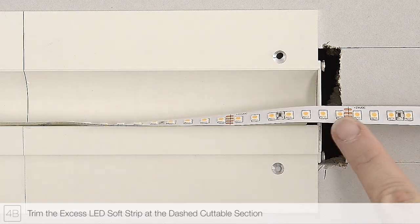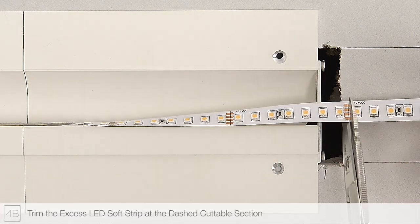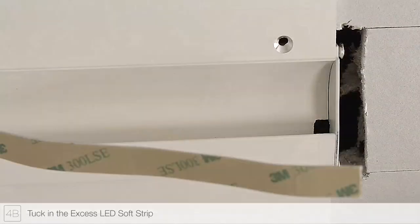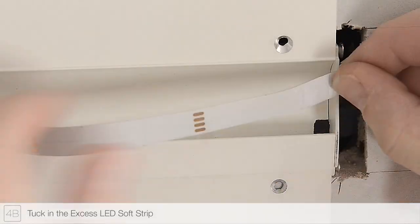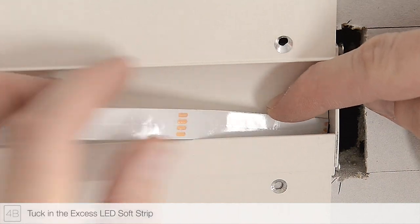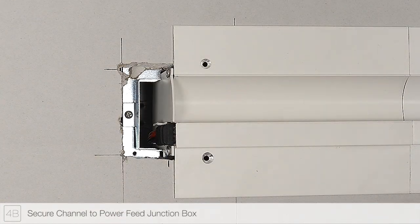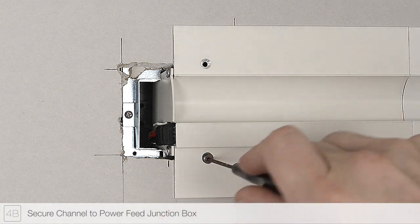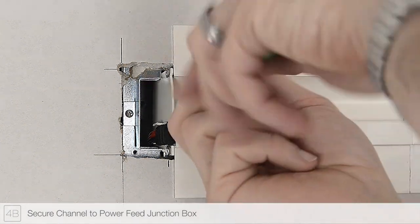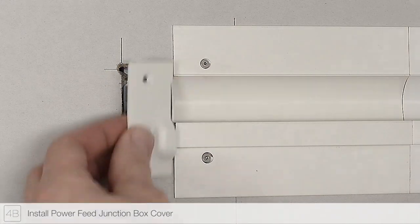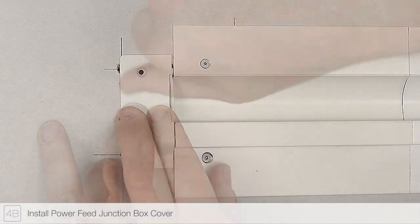Trim any excess soft strip along the dashed cutting lines. It is important to only trim the strip at these lines. Tuck any excess soft strip behind the drywall. Fasten the drywall screws to secure the channel to the junction box. Install the power feed end cap into the junction box slot.